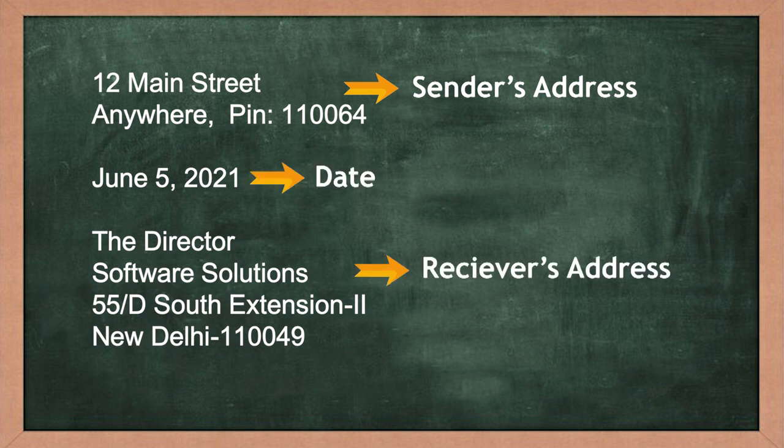Then you write the receiver's address. In the receiver's address you write the designation of the person — say, the Director, Here Software Solutions — the name of the company and the address: 55D, South Extension Part 2, New Delhi 110049. Okay, so now I'm able to see the formal letter in terms of building blocks.